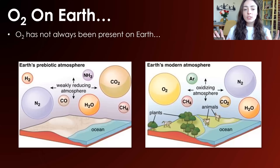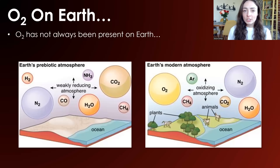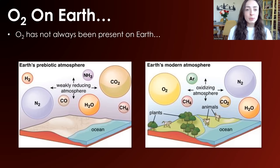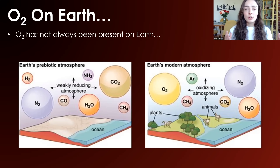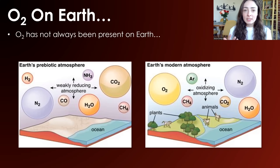First things first, I want to give a little background on why this event even happened, and to do that I need to discuss oxygen on Earth. Oxygen is the gas in our atmosphere that we breathe to metabolize and gain energy. But oxygen hasn't always been present on Earth. Currently it makes up about 20% of our atmosphere, but on early Earth — before about 2.4 billion years ago, so from 4.5 to 2.4-ish billion years ago — there was negligible oxygen in Earth's atmosphere and ocean.